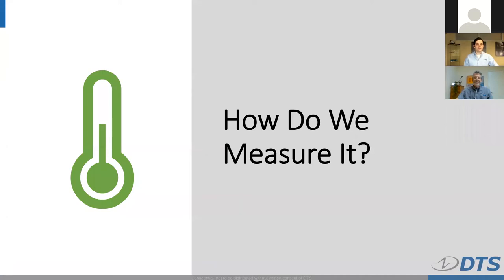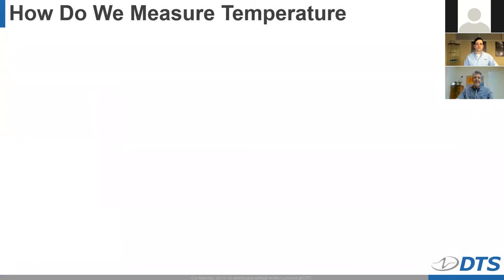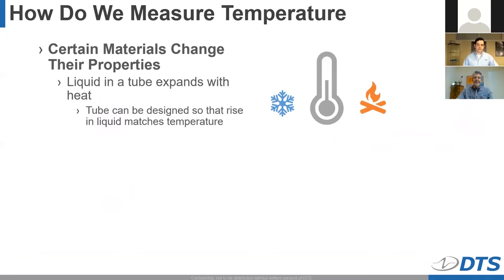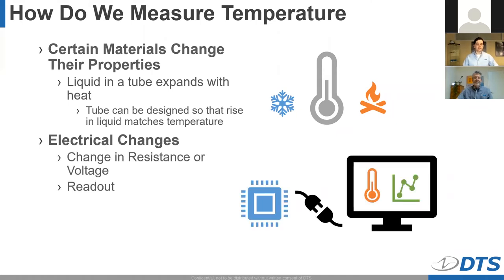So, how do we measure temperature? We know that certain material properties change with temperature, and some materials have a linear relationship with temperature, at least for certain ranges, which makes them a good ally for getting helpful readings. The most universally known, of course, is the traditional thermometer — it simply contains a fluid in a tube designed so that the rising or falling level of the liquid matches the corresponding temperature. Other materials have changes useful for electronic systems: resistance or voltage may change within an element, and if we set it up correctly, we can get accurate readings. There are some common options for the solution, and that is what we will cover next.